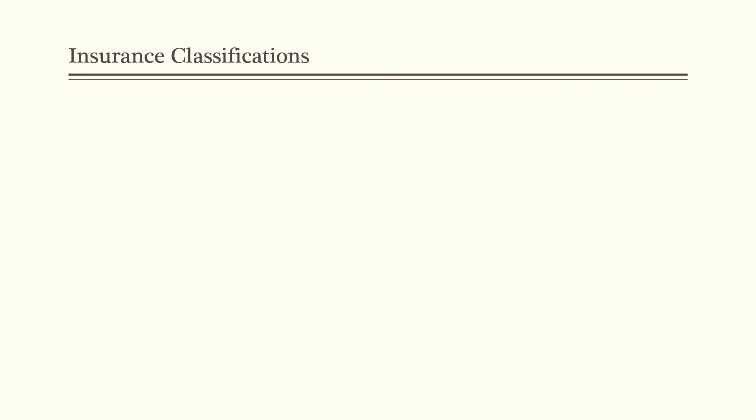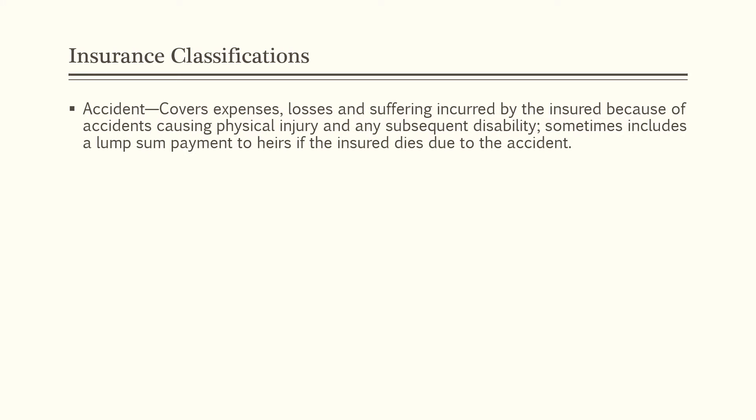Insurance is classified according to the nature of the risk involved. Different types of insurance apply to different types of risk because the types of losses that are expected and reasonably foreseeable vary with the nature of the activity or property being insured. We will begin with accident insurance. It covers expenses, losses, and suffering incurred by the insured because of accidents causing physical injury and any subsequent disability. It sometimes includes a lump sum payment to heirs if the insured dies due to the accident.